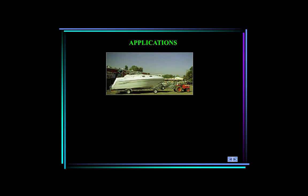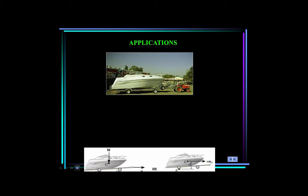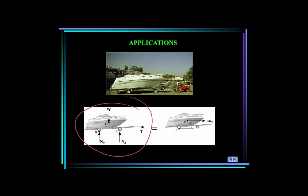Here we see a boat on a trailer. They both undergo rectilinear motion, meaning they translate but do not rotate. In order to find the reactions at the trailer wheels and the acceleration of the boat, we need to draw the free body diagram and kinetic diagram. Reaction forces appear at each wheel — there may be a single front wheel and dual rear wheels, so you could write 2N_B. The weight vector is always applied at the center of gravity. The kinetic diagram shows the center of gravity accelerating with acceleration a_G, represented as the mass times acceleration vector, located at perpendicular distance d from point d.